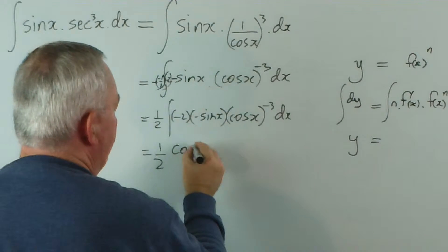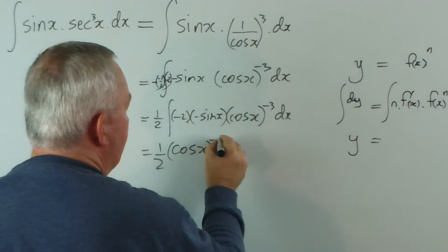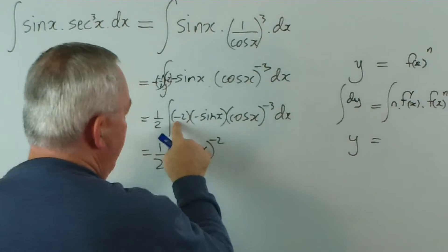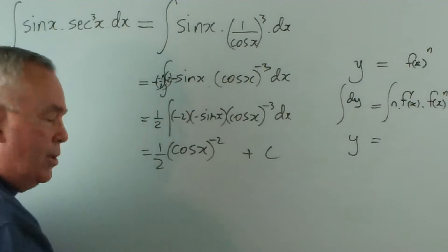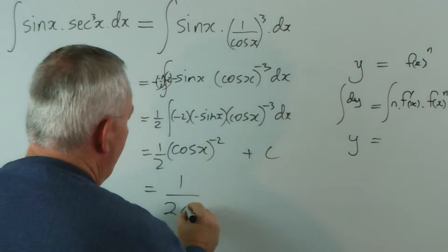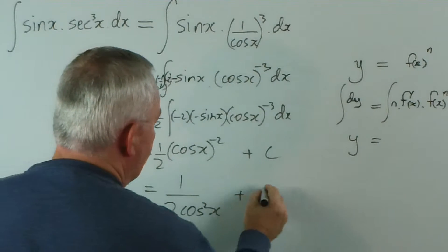And the function is cos x and the power is negative 2 for n plus c. And there was the solution. So 1 over 2 cos squared x plus c.